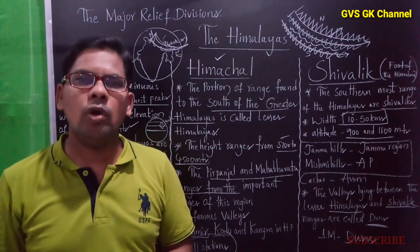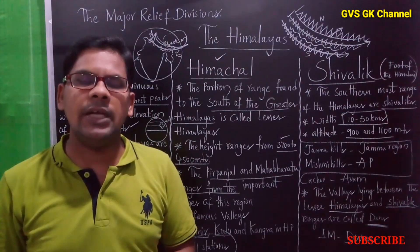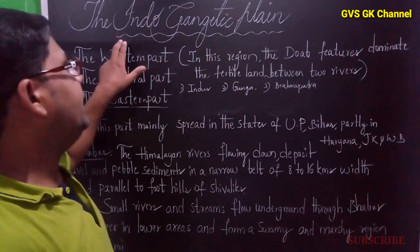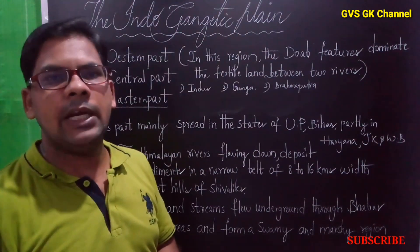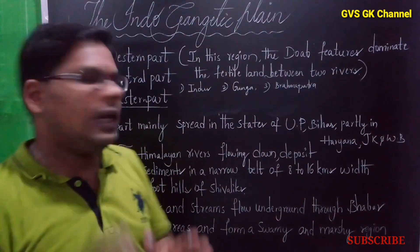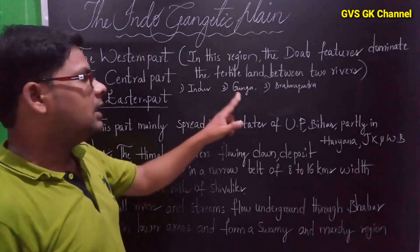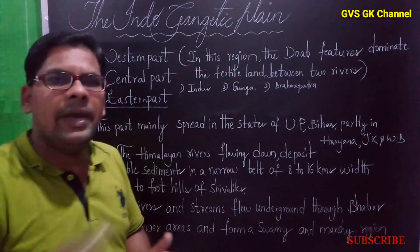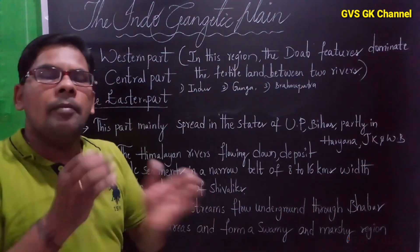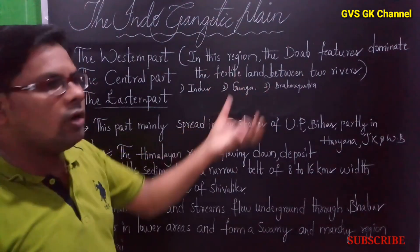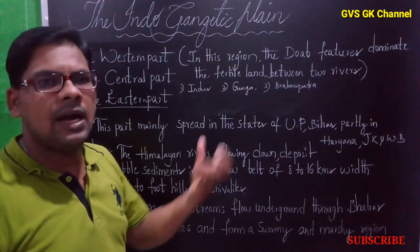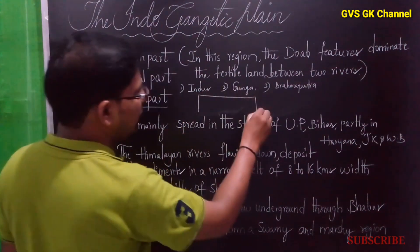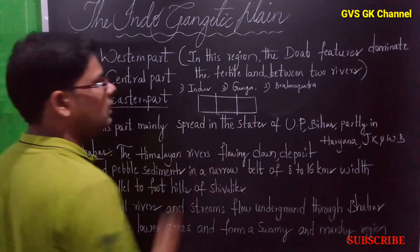Next, we are going to discuss the Indo-Gangetic plain. The Indo-Gangetic plain has three important rivers: Indus, Ganga, and Brahmaputra. About 20 million years ago, it was a shallow basin, but it was filled with sediments and alluvial soil brought by these three rivers. It is divided into three parts: the western part, the central part, and the eastern part.